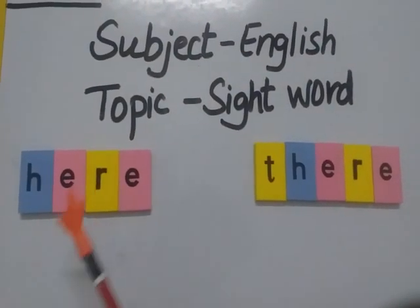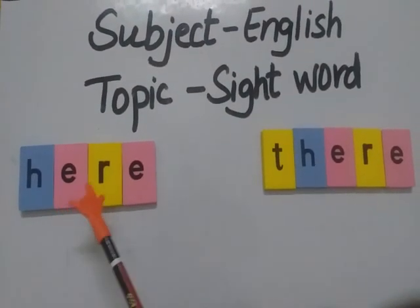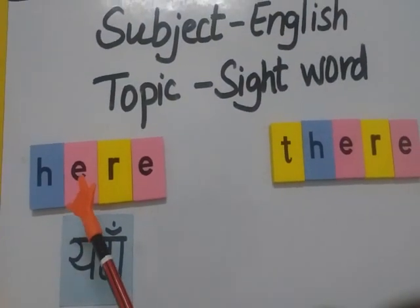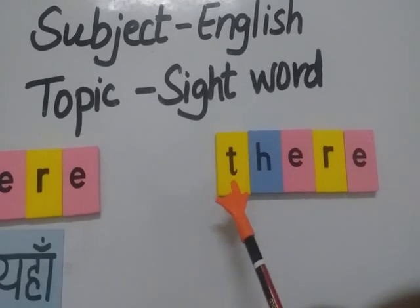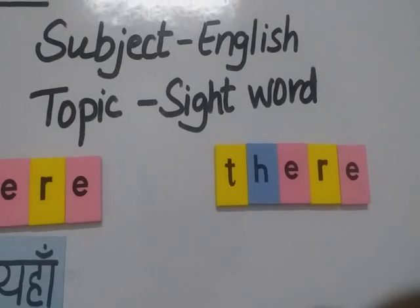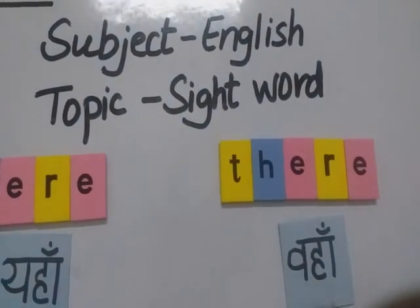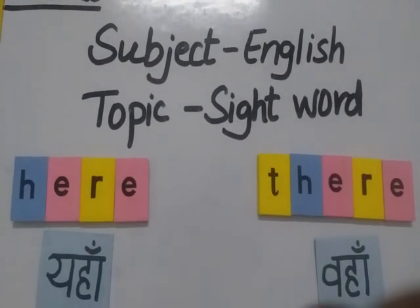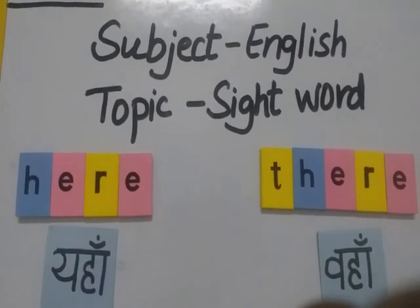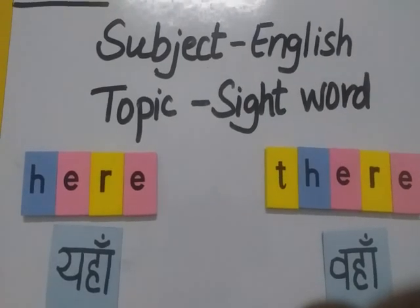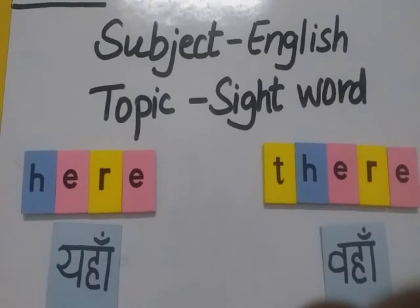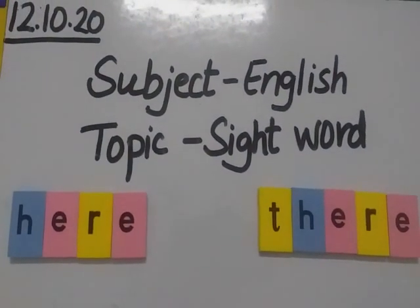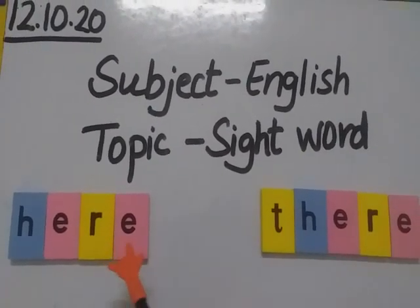The two sight words are 'here' and 'there'. Here is spelled H-E-R-E, and in Hindi it means 'yaha'. There is spelled T-H-E-R-E, and it means 'waha'. Sight words are the words that appear most frequently in our reading and writing, so you have to simply memorize and understand these words.